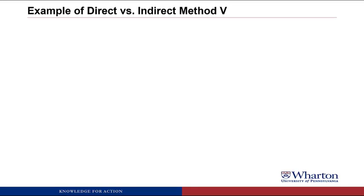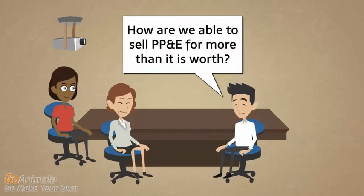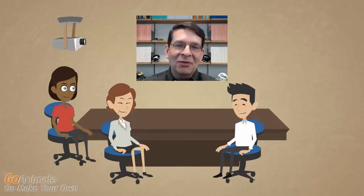First, let's look at an example of how to treat a gain on sale of property, plant and equipment under the indirect method cash flow statement. So let's say we sold property, plant and equipment worth $70 on the books for $75 cash. How are we able to sell PP&E for more than it is worth? We can't really sell something for more than it's worth because what somebody pays for it is essentially what the asset is worth. But the book value of property, plant and equipment is going to be a function of our depreciation assumptions, because it equals the original cost minus the accumulated depreciation.